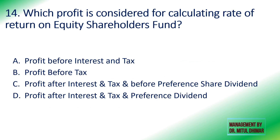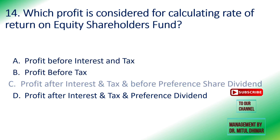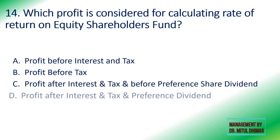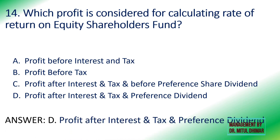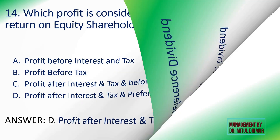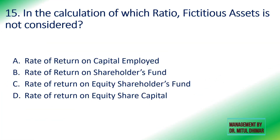Fourteenth: which profit is considered for calculating rate of return on equity shareholders' fund — profit before interest and tax, profit before tax, profit after interest and tax before preference share dividend, or profit after interest, tax, and preference dividend? For rate of return on equity shareholders' fund, we need the profit belonging to equity shareholders, meaning after interest, tax, and preference dividend.